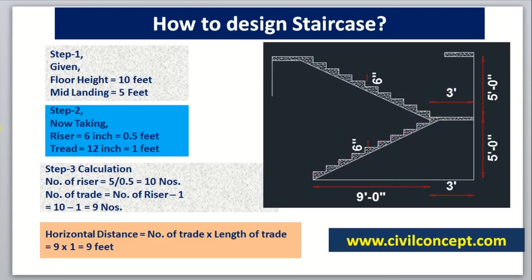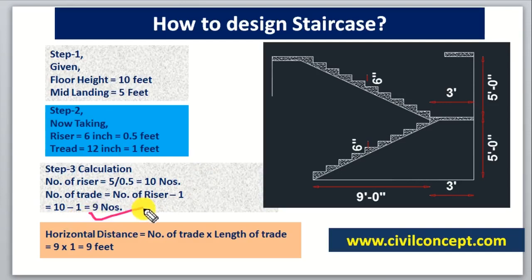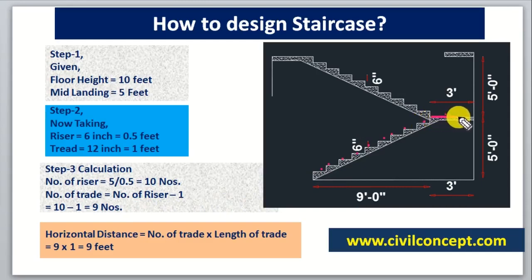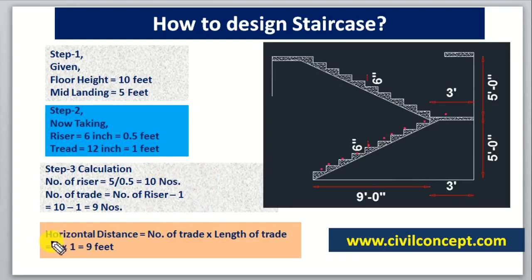Now the number of treads. The formula is: number of treads = number of risers − 1. So 10 − 1 = 9 treads. Count: 1, 2, 3, 4, 5, 6, 7, 8, 9. One riser merges into the landing, which is why we subtract 1 from the number of risers to get the number of treads.